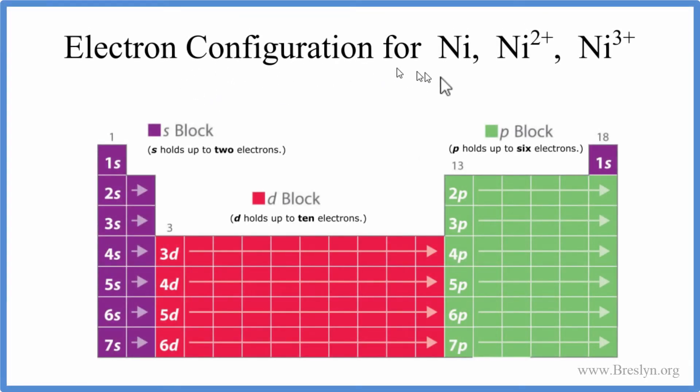In this video we'll write the electron configuration for nickel and then the nickel 2+ and nickel 3+ ions. So to do that, let's start out with nickel. When we look on the periodic table, here's nickel.